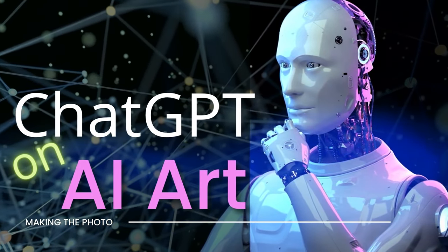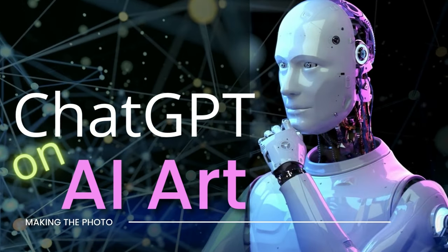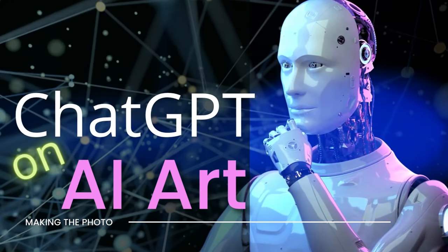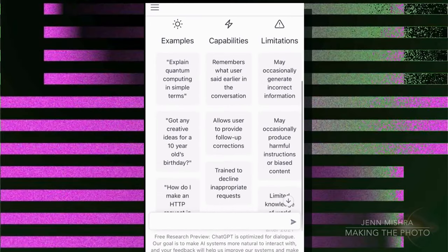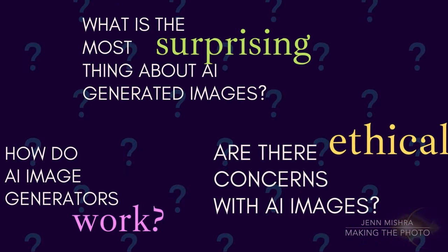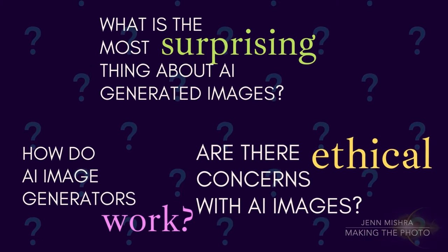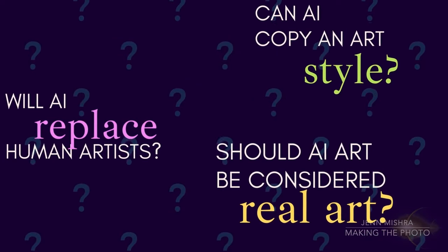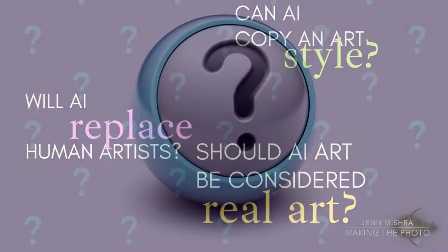Hi, I'm Jen with Making the Photo. Today I've invited a guest to talk about AI-generated art — well, sort of a guest. Let me introduce ChatGPT. ChatGPT is a large language model trained by OpenAI, designed to generate human-like text responses based on input it receives. I asked ChatGPT questions about AI-generated art, everything from how to make better images to the ethics and concerns surrounding AI art. Let's see what the AI has to say about AI art.